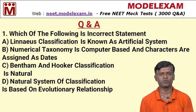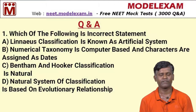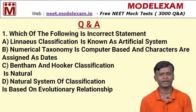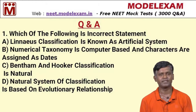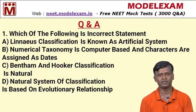Till now we have discussed Chapter 1 dealing with the living world, kingdom classification, and plant kingdom. We analyzed living animals and plants, how to classify organisms, how they should be named, the nomenclature of the binomial system, and important aspects of the plant kingdom. Now we are going to discuss some questions based on this chapter.